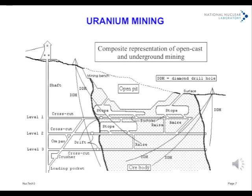Uranium mining may be either open-cast or underground, and since ores may contain as little as one part per thousand of uranium, a large amount must be extracted, most remaining eventually as mill tailings. As these contain decay products — notably radium, which is particularly noxious — they need careful containment that may not always have been as meticulous as it should have been. Consequently, extraction is by far the most environmentally damaging part of the whole fuel cycle, one argument for making the best possible use of uranium already extracted.